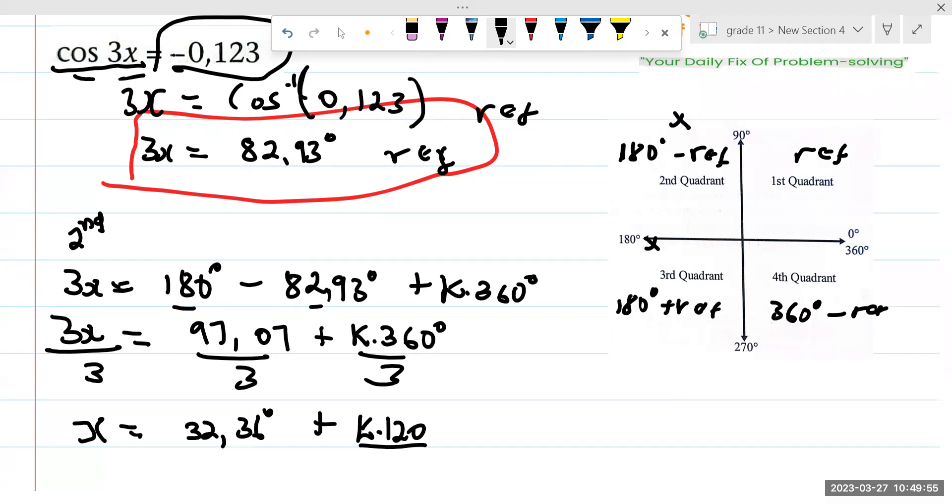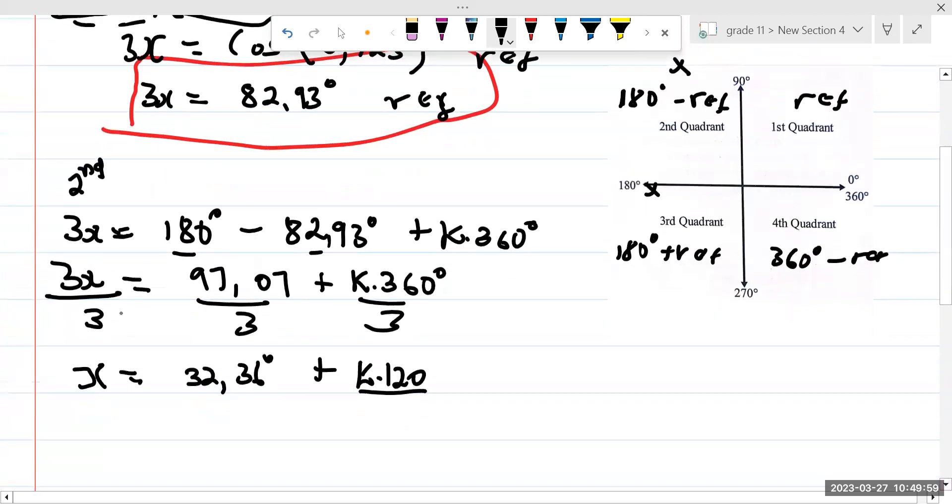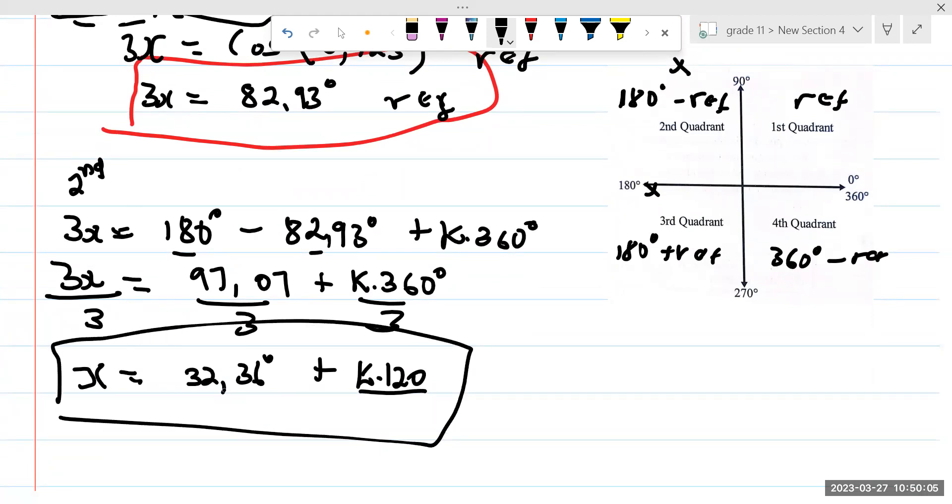But I didn't start by saying my period is going to be 120. I said the period of cosine, what is the period of cosine? It's 360. Automatically, this thing here, it gives me the correct period. After solving on the correct quadrant, on the second quadrant, I'm going to have 32.36 plus K multiplied by 120. Is this the only solution that we're going to have?